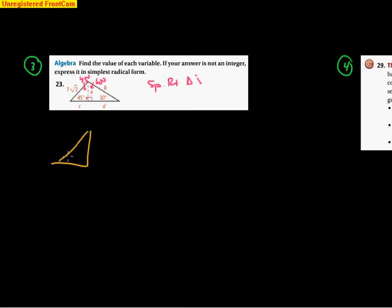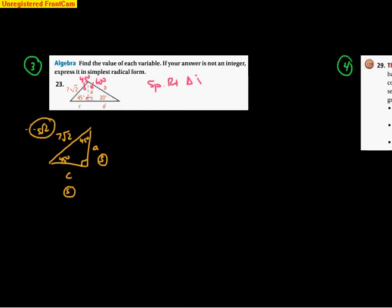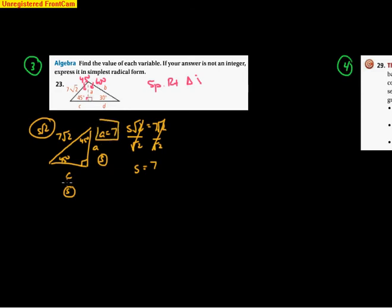For the 45-45-90 triangle, the sides are labeled s, s, and s√2. We are given s√2 = 7√2. Dividing both sides by √2, s = 7. That means a = 7 and c = 7, because both legs of a 45-45-90 are s.